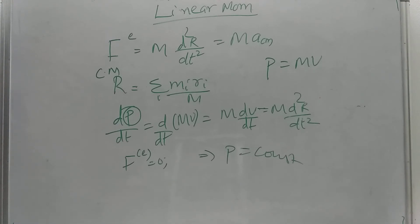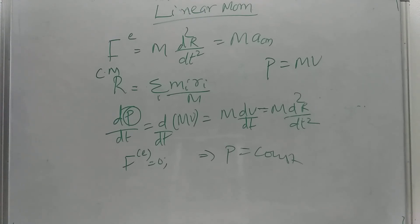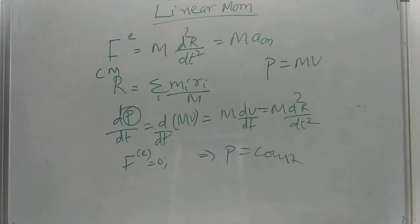If the external force is zero, we have the zero momentum frame — the C frame of reference — where P = MV = 0. This means the center of mass is at rest, V = 0. That is why we use the zero momentum frame, also called the C frame of reference or center of mass frame.